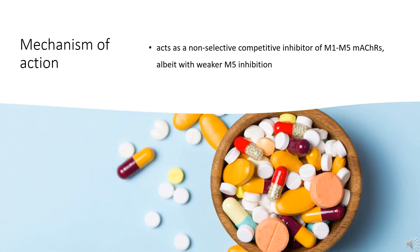Scopolamine acts as a non-selective competitive inhibitor of M1–M5 muscarinic acetylcholine receptors (mAChRs), albeit with weaker M5 inhibition. As such, scopolamine is an anticholinergic with various dose-dependent therapeutic and adverse effects. Recent evidence suggests that M1, and possibly M2, mAChR antagonism at interneurons acts through inhibition of downstream neurotransmitter release and subsequent pyramidal neuron activation, to mediate neurological responses associated with stress and depression. Similar antagonism of M4 and M5 receptors is associated with potential therapeutic benefits in neurological conditions such as schizophrenia and substance abuse disorders. The significance of these observations to scopolamine's current therapeutic indications of preventing nausea and vomiting is linked to its anticholinergic effect and ability to alter signaling through the CNS associated with vomiting.